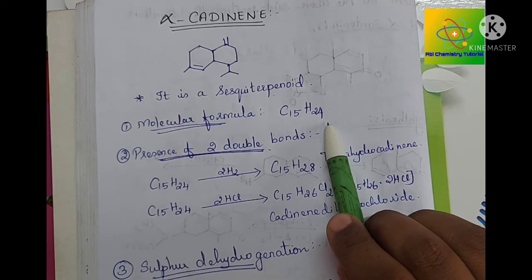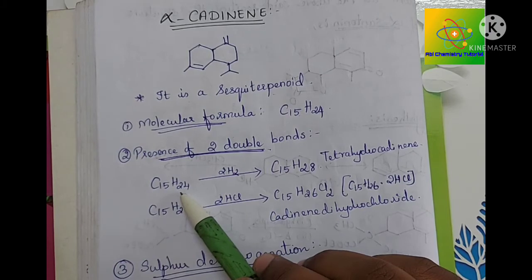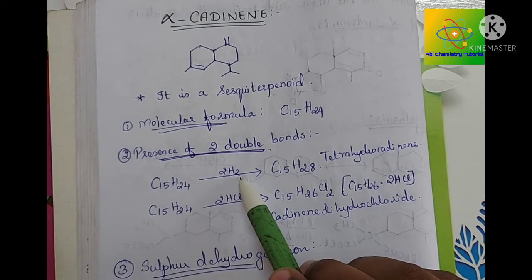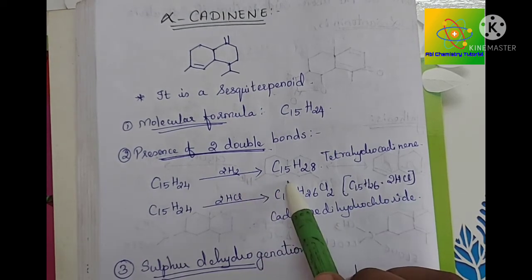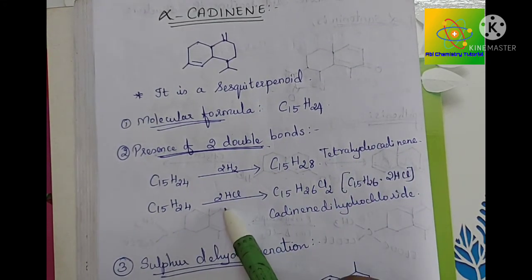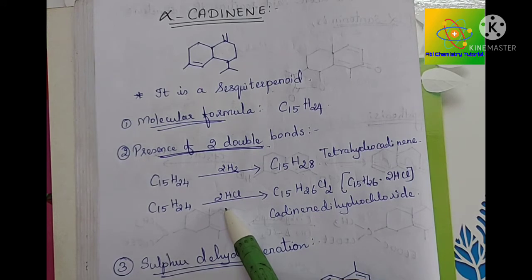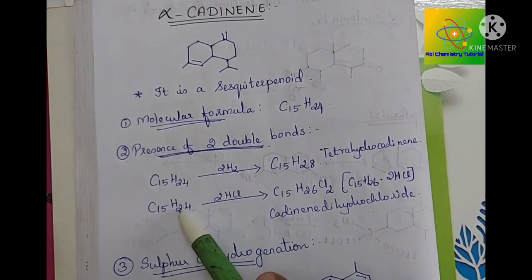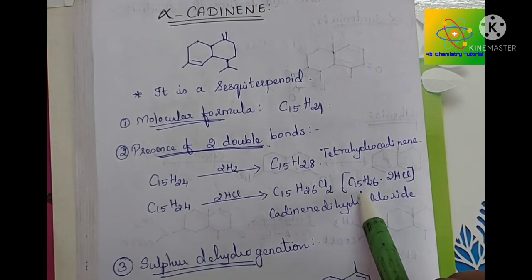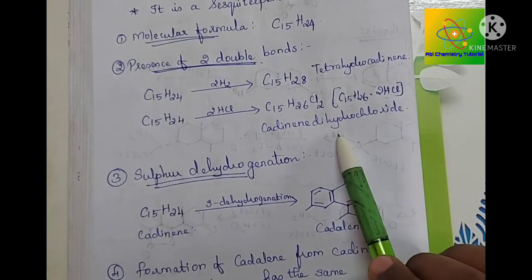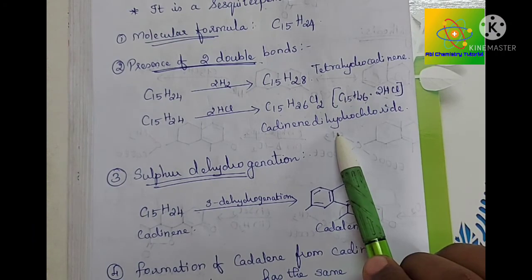Now we are going to check the presence of double bonds. Cadinin adds two molecules of hydrogen, that is four hydrogen atoms, to form C15H28, that is tetrahydrocadinin. Similarly, it adds two molecules of hydrochloric acid to form cadinine dihydrochloride, that is C15H26Cl2 or C15H26·2HCl. This shows that alpha-cadinin has two double bonds.